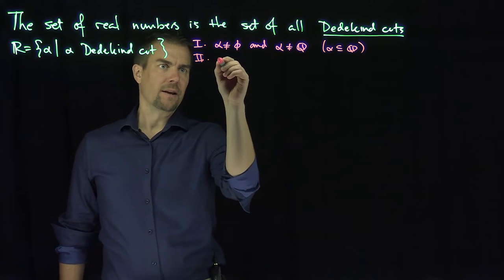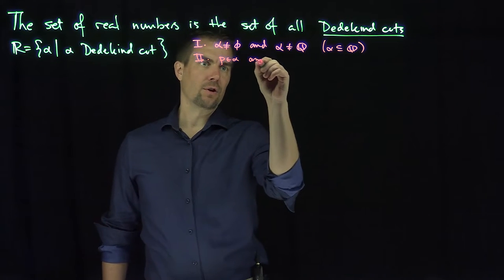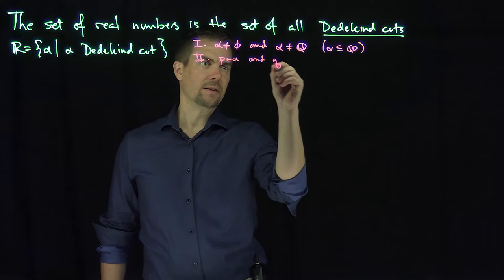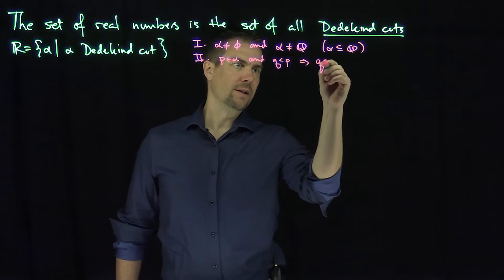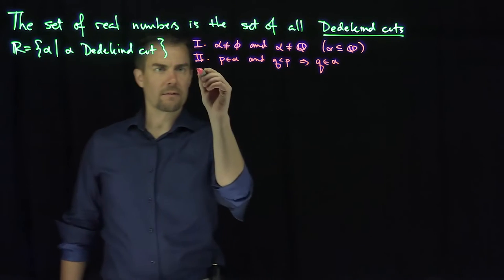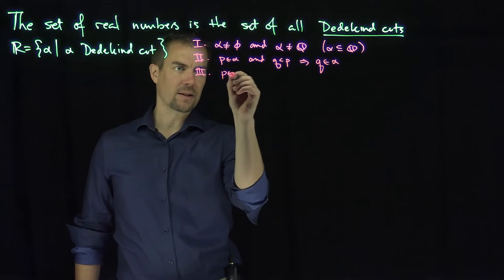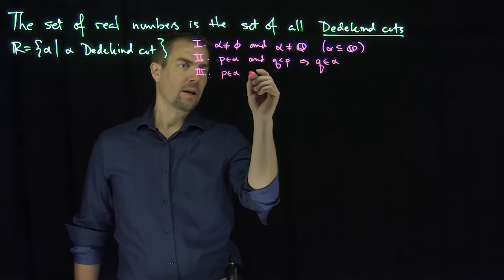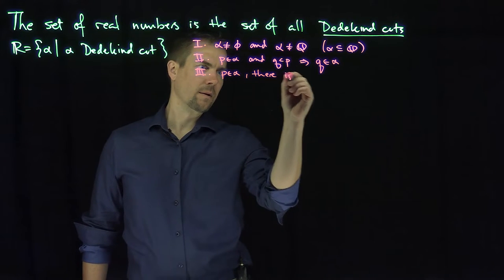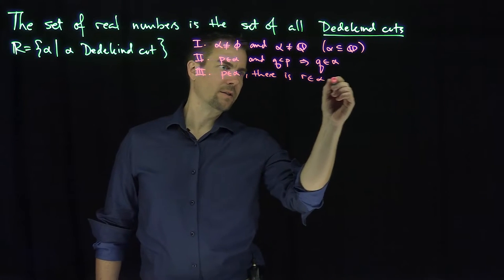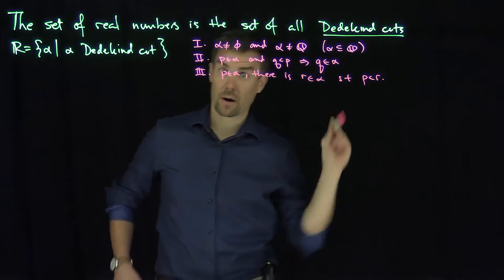The second property is that if p is in the cut and q is less than p, that implies that q is in the cut. And finally, the third property is that if p is in the cut, then there is an r in the cut such that p is less than r.